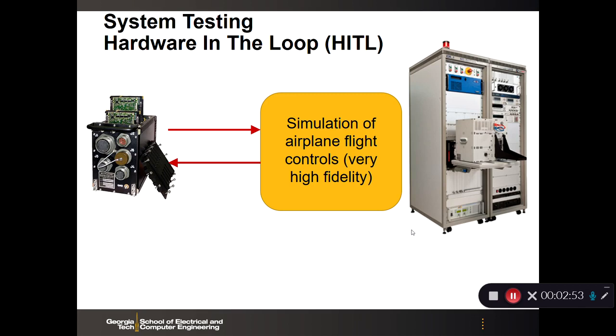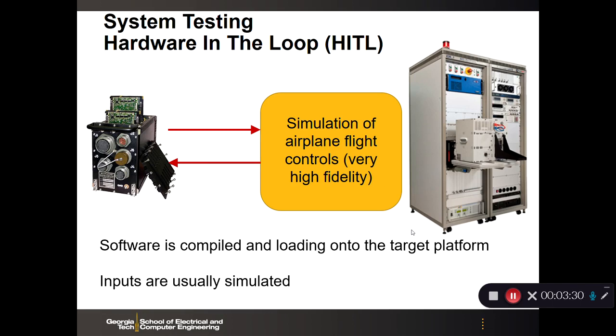So, this system on the right is a hardware in the loop test rack. And its sole purpose is to stimulate the hardware on the left and capture the outputs in real time. And timing is of great importance because in a lot of instances, you're looking at how much of a delayed response the system has. How this is done is the software is compiled and loaded onto the target platform. When we say target, it's the actual system under test. And then inputs are usually simulated.